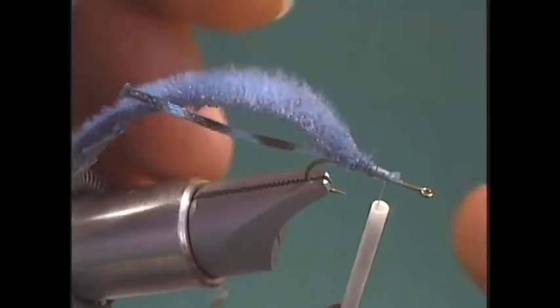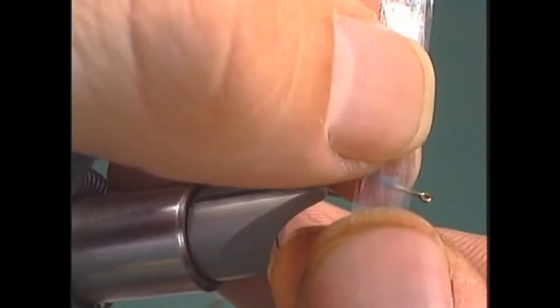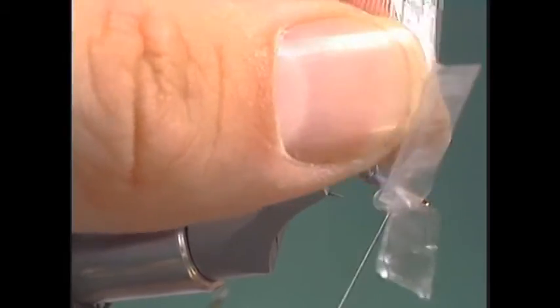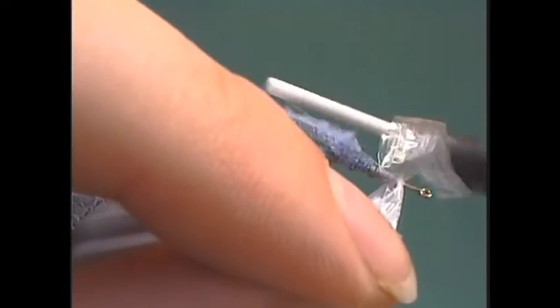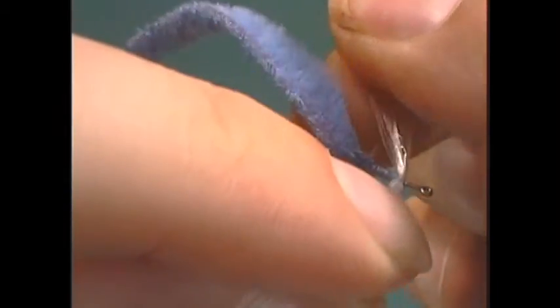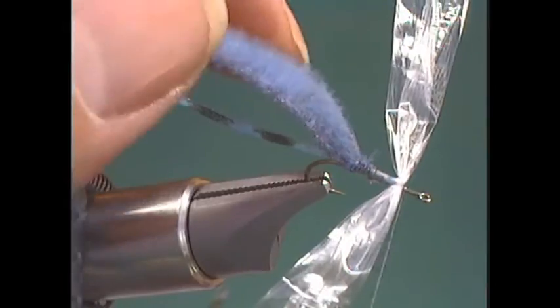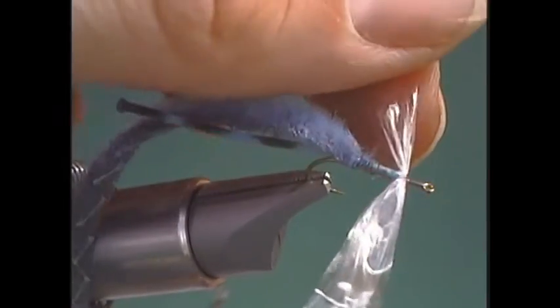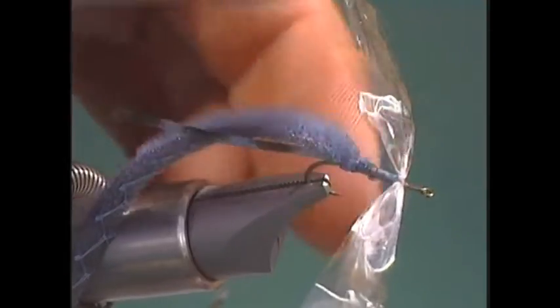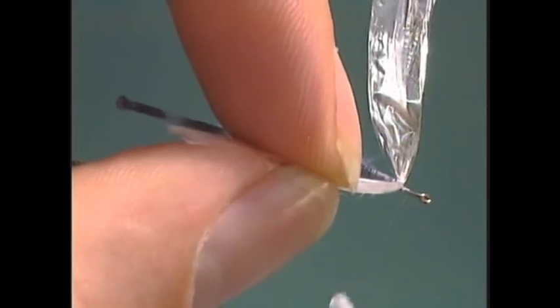I'll bring them up to the hook. I'll just do a figure eight, cinching them in there. Then pulling on both ends, making sure they're nice and even on both sides. Just take several more wraps, making sure it's tied in there nice and tight. Then I'll bring my thread forward a little bit.